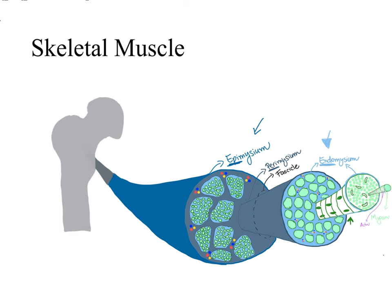Bodybuilders have very large skeletal muscles. But skeletal muscle cells cannot undergo cell division after we are born, so how are those muscles so big? The answer is that skeletal muscle cells do not undergo cell division — we do not have an increase in skeletal muscle cell number. What happens is that there is an increase in the number of myofibrils inside the skeletal muscle cells. By increasing the number of myofibrils inside skeletal muscle cells, skeletal muscle cells get bulkier and thicker, and that causes the enlargement of the skeletal muscles.